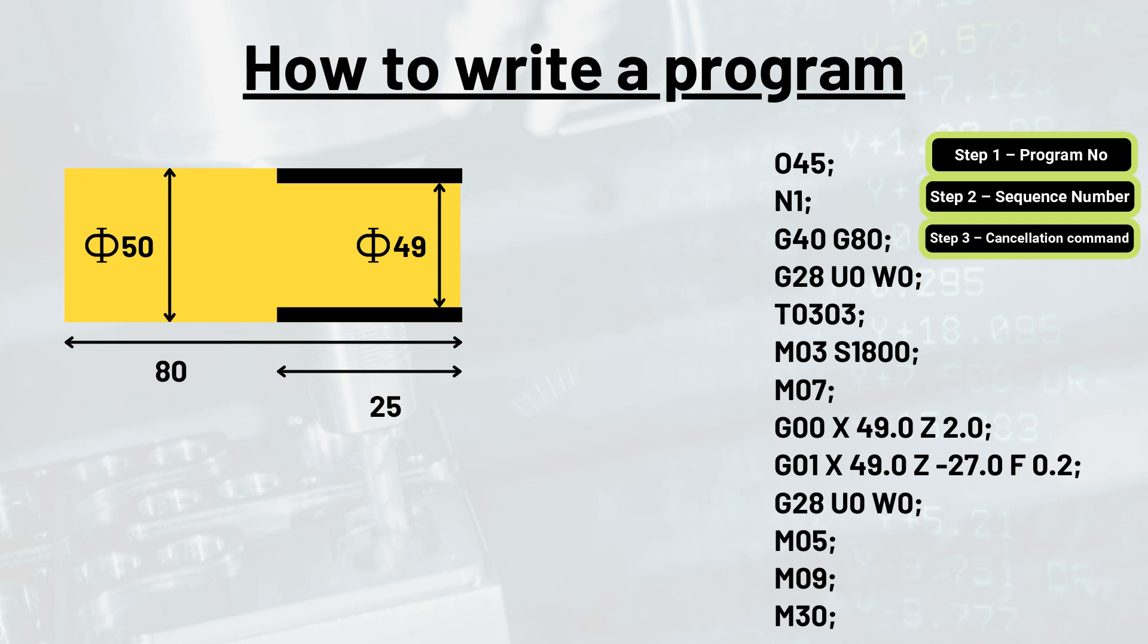The next step is called machine home position selection. Our workpiece here has 50 units diameter. We have to make it 49 units for a span of 25 units from one end.